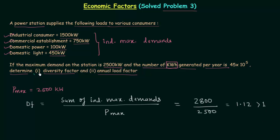We are done with the first part. Now we will solve the second part, calculating the annual load factor, which is the plant load factor (PLF). We previously calculated a monthly plant load factor; now we calculate it for one year. The number of kilowatt hours generated per year is given as 45 into 10 raised to power 5.